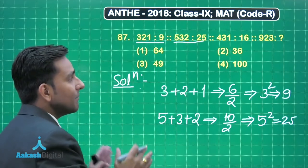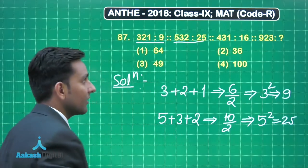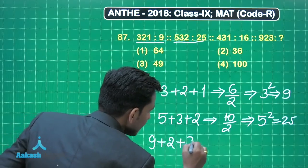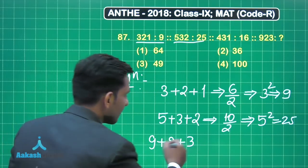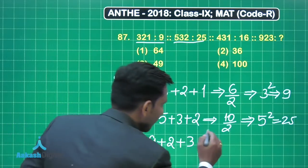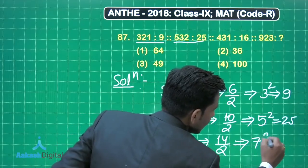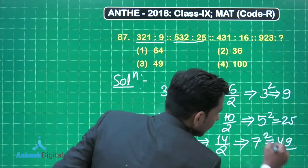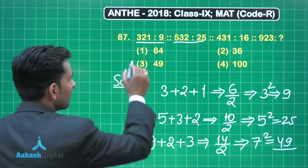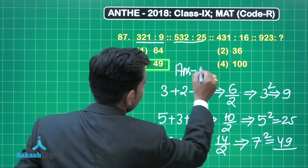Now when we apply the same pattern for 923, we will obtain the correct number which will replace the question mark. So for 923, first find the sum of the digits: 9 plus 2 plus 3 equals 14. Then 14 divided by 2 we are obtaining 7. So 7 squared is 49. So 49 is the correct answer for this question, and the third option is correct.